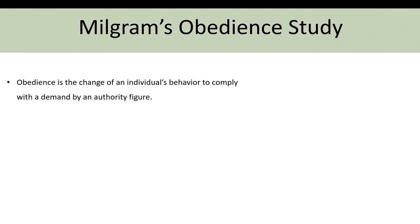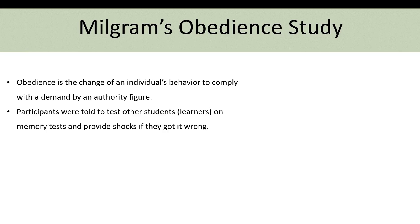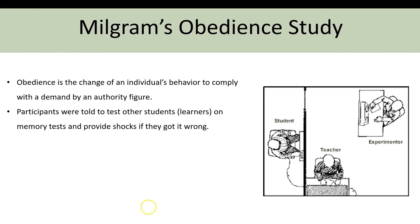The classic study on conformity was Milgram's obedience study. Obedience is a change of an individual's behavior to comply with a demand by an authority figure. In this study, Milgram was the authority figure, and participants were told to test other students — called learners — on different memory tests. Participants provided shocks if the learners got answers wrong.